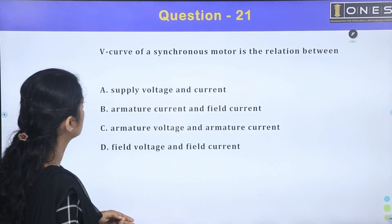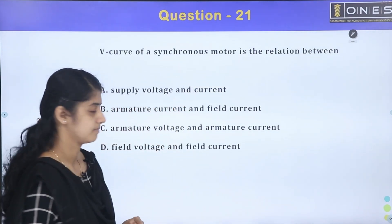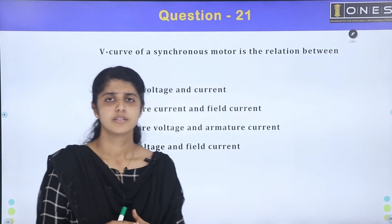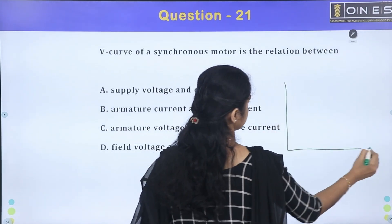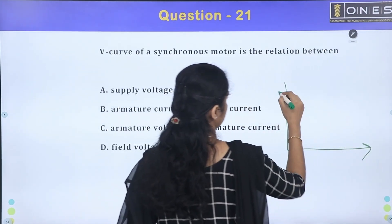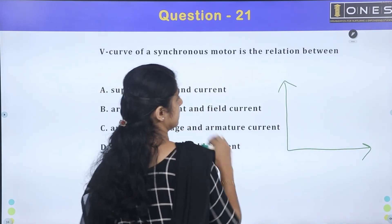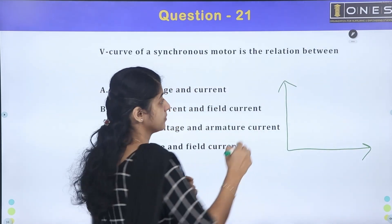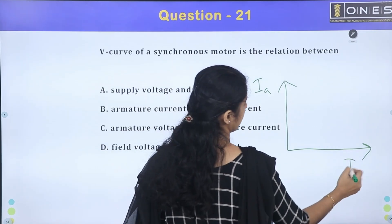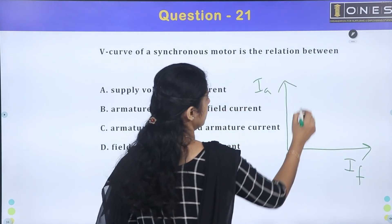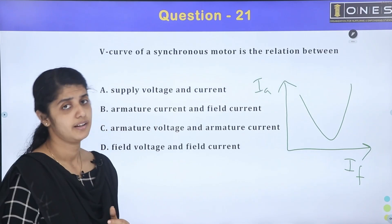Next question. The V-curve of a synchronous motor is the relation between armature current and field current. The V-curve is a graph showing armature current versus field current.